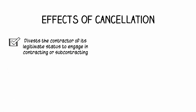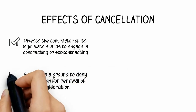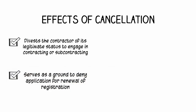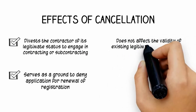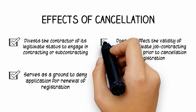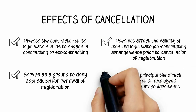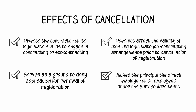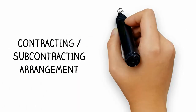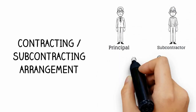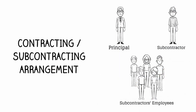Once the certificate of registration is cancelled, the contractor is denied legitimate status to engage in contracting or subcontracting arrangements. It also serves as a ground to deny application for renewal of registration. The cancellation of registration will not impair the validity of existing legitimate job contracting arrangements the contractor may have entered into prior to cancellation. Lastly, contracting with a delisted contractor shall make the principal the direct employer of all employees under the service agreement. That concludes our discussion on contracting and subcontracting in the Philippines. Join us again as we take on another module to educate our general public.